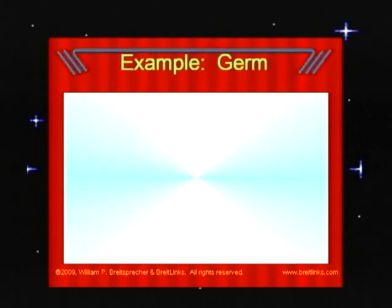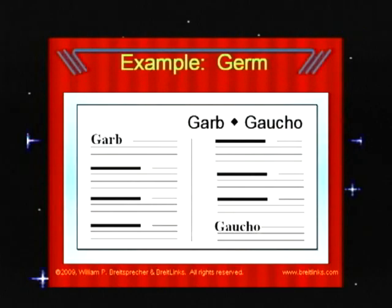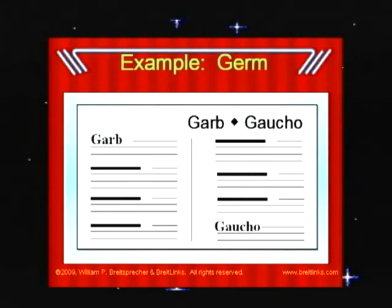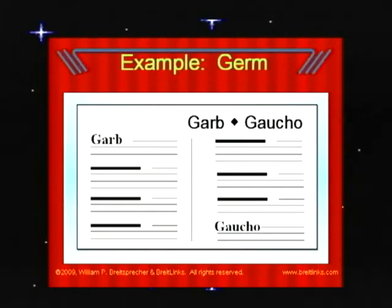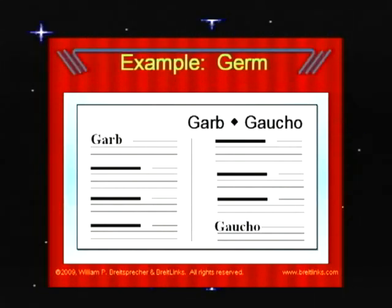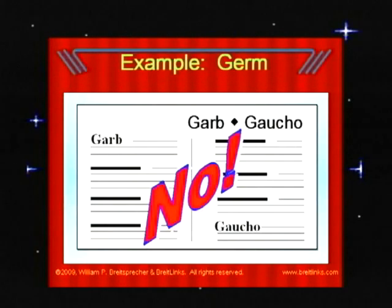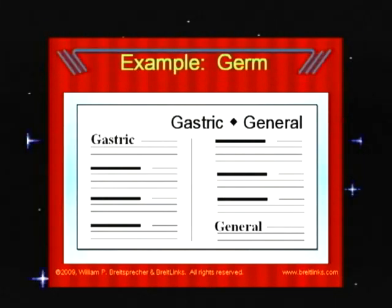Here's an example: germ. The first guide word is garb, G-A-R. G-E would be after G-A. But look, the second guide word is also G-A. Our word is after both of these guide words, so our word cannot be on these pages.